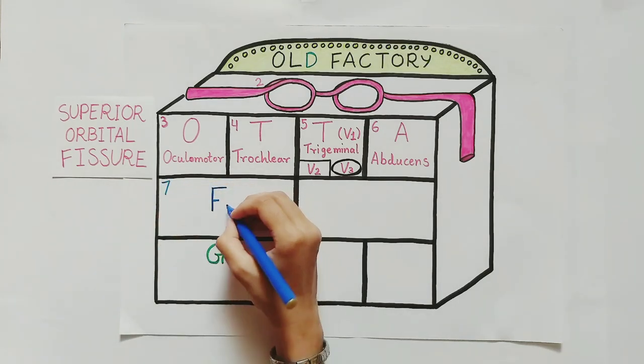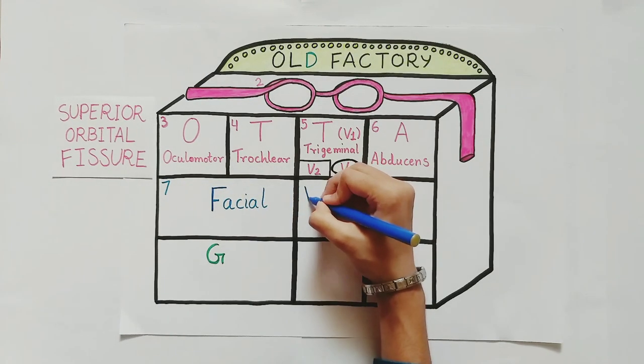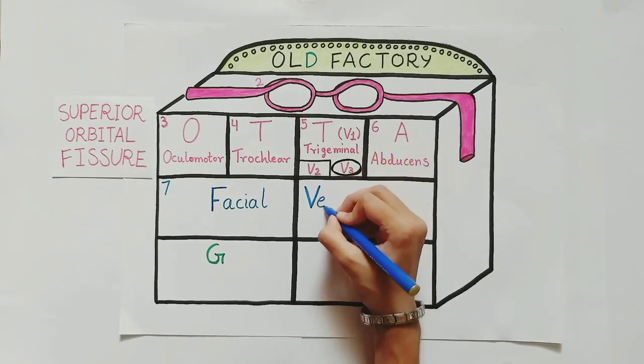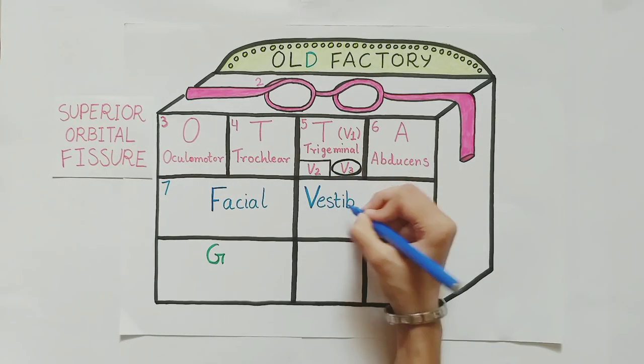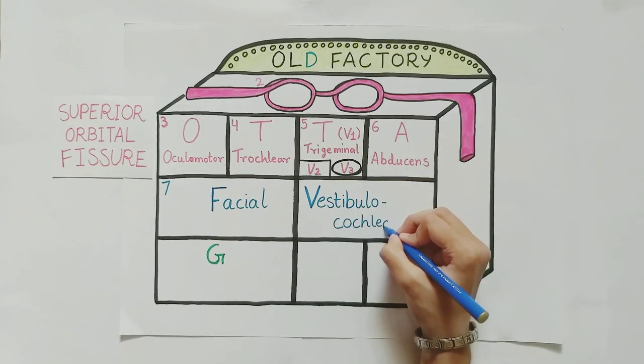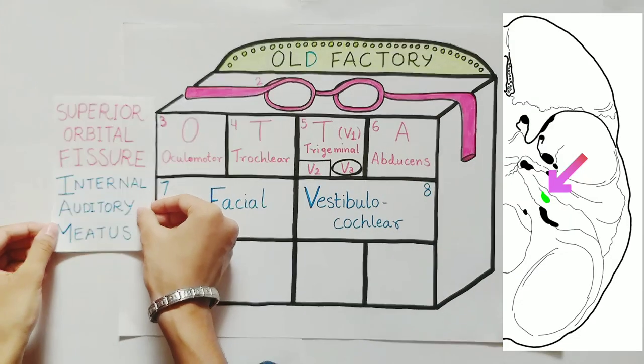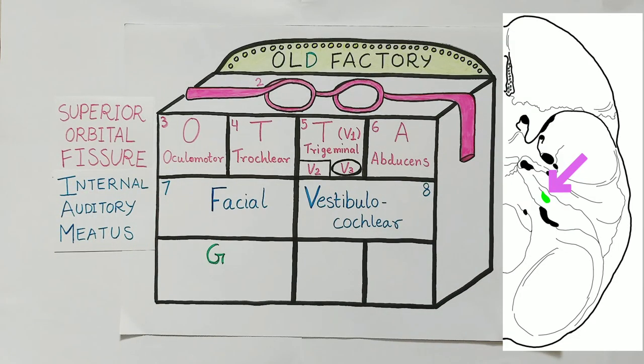Hear me out as I go to the first floor, which only has two rooms, denoting the seventh and the eighth cranial nerve, which are facial nerve and vestibulocochlear nerve, that pass through the internal acoustic meatus, also known as the internal auditory meatus.